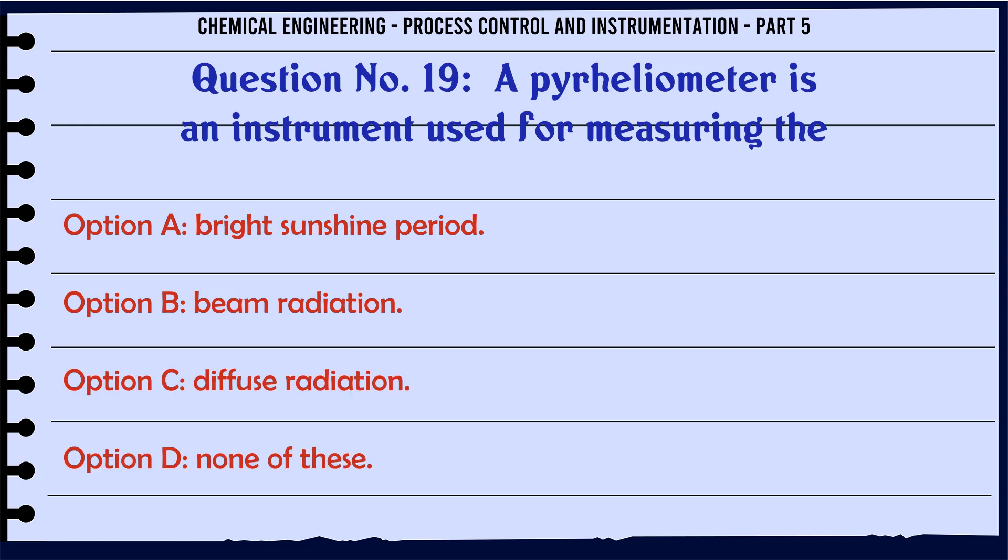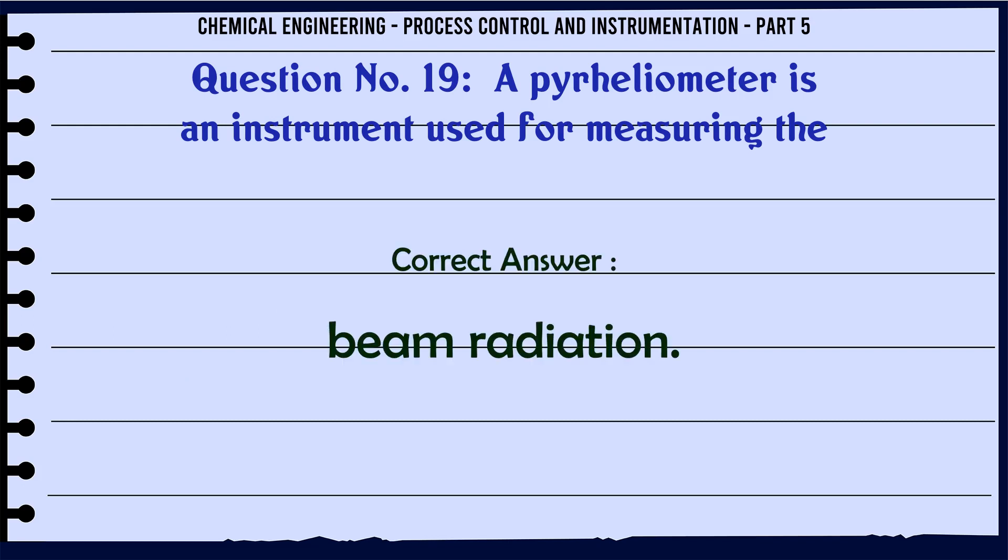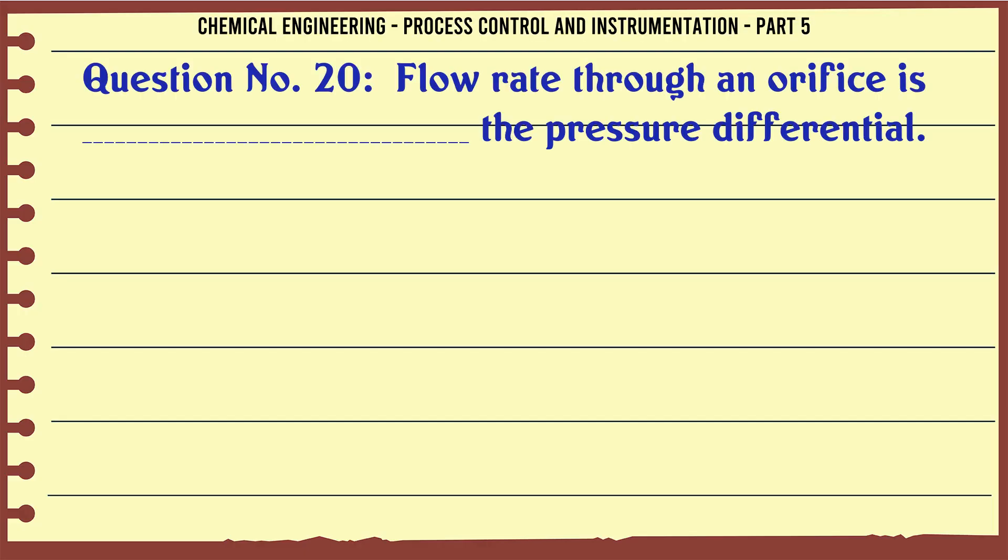A pyrheliometer is an instrument used for measuring the: A. Bright sunshine period. B. Beam radiation. C. Diffuse radiation. D. None of these. The correct answer is Beam radiation.